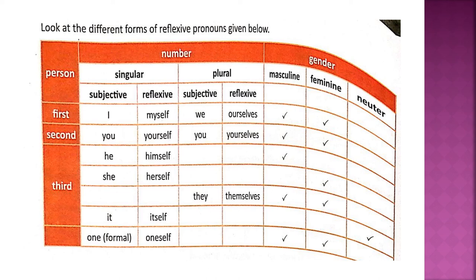Now let us take the homework — page number 24. Put a circle around the pronouns in each sentence and say whether they are reflexive or emphatic. You can do it in the textbook. Thank you.